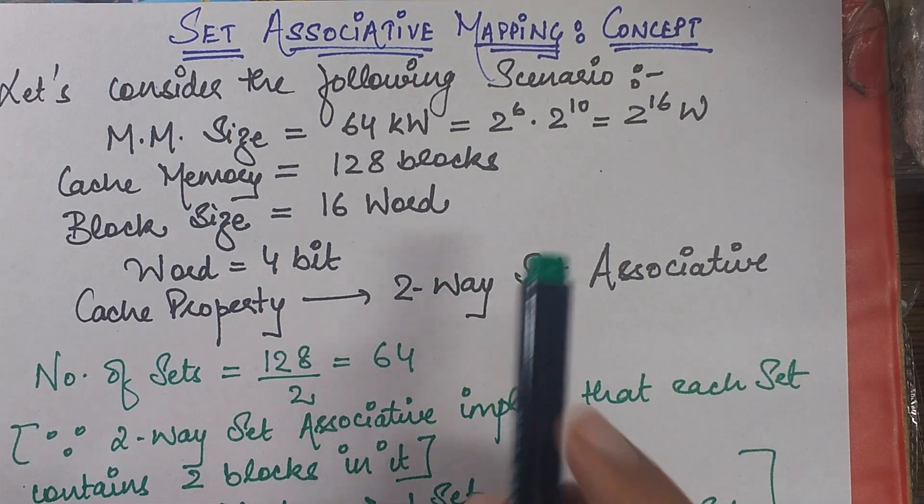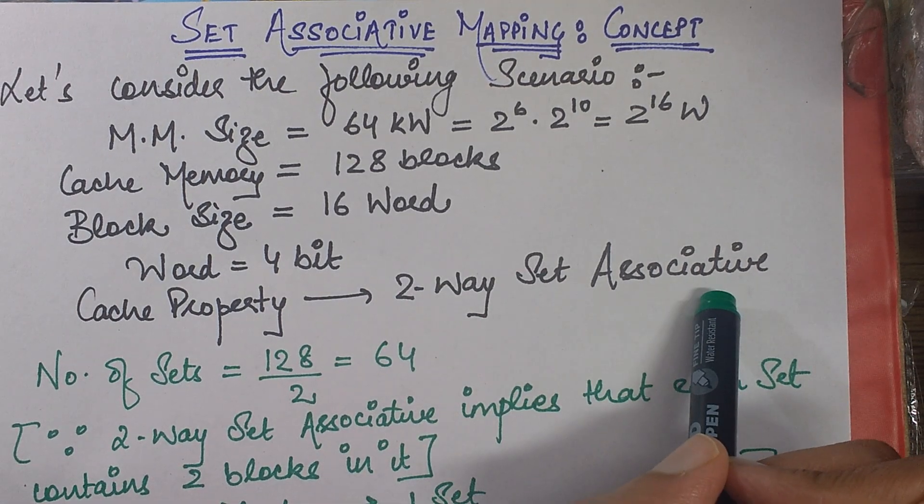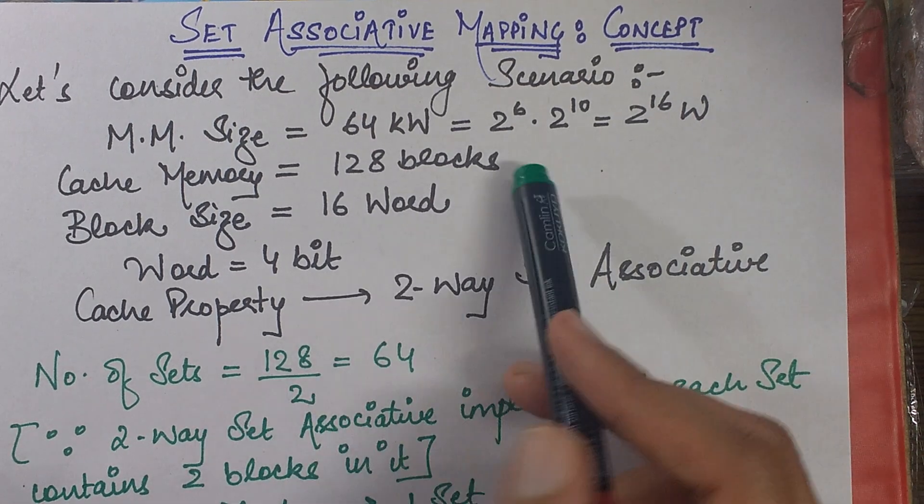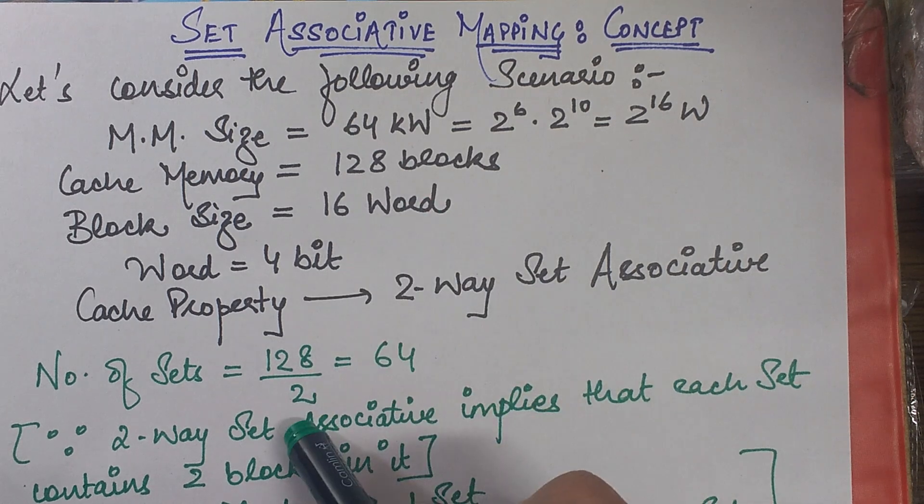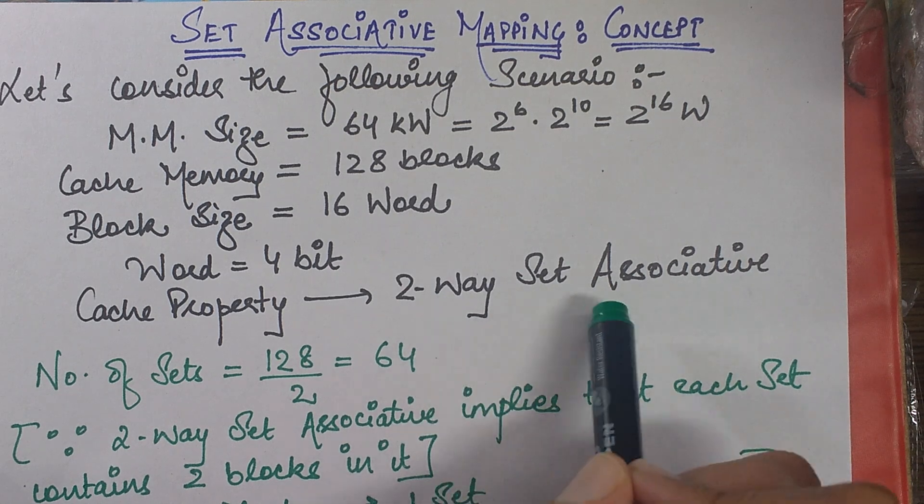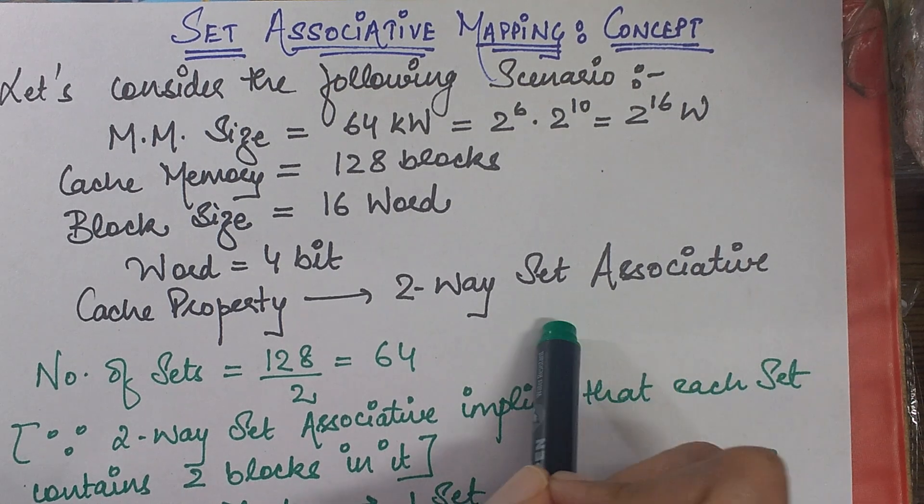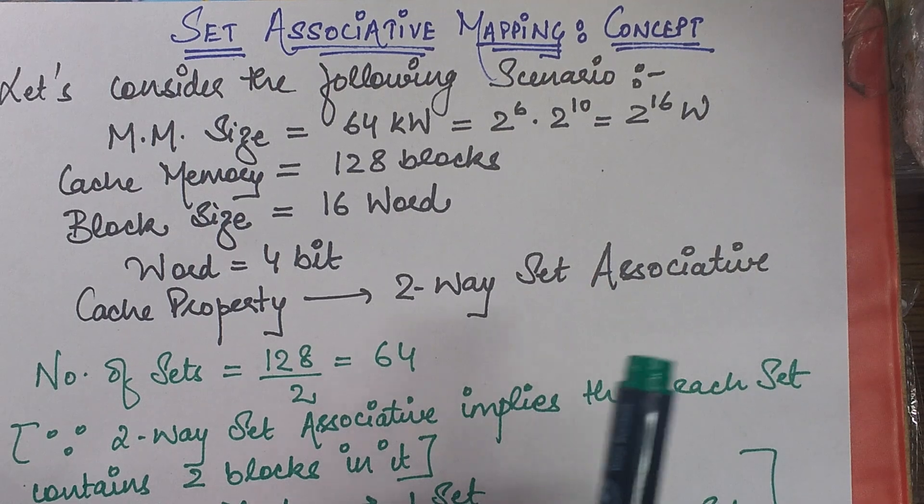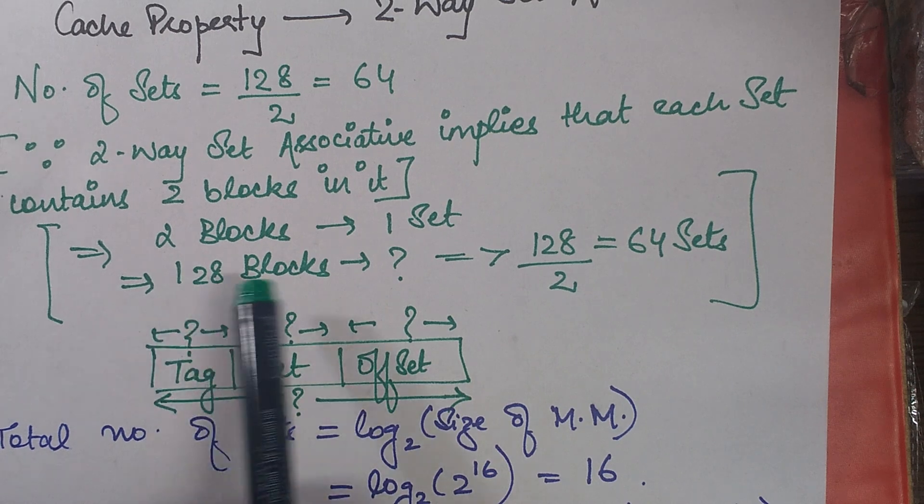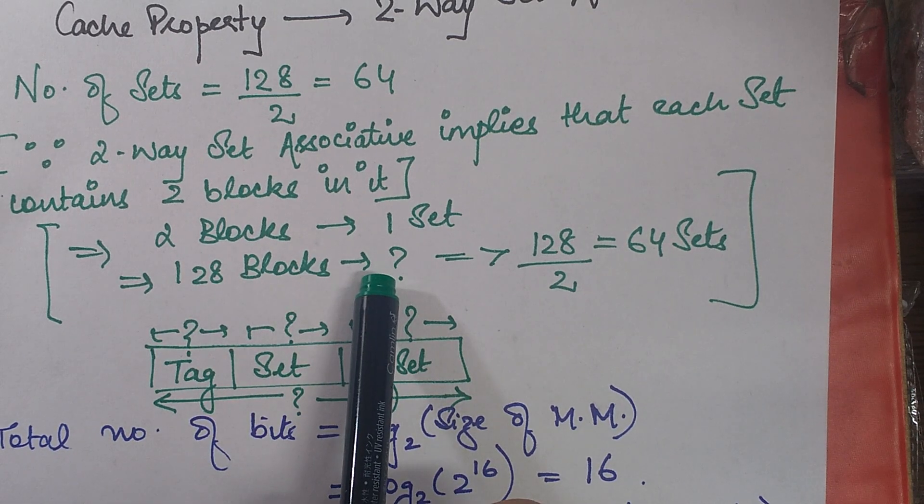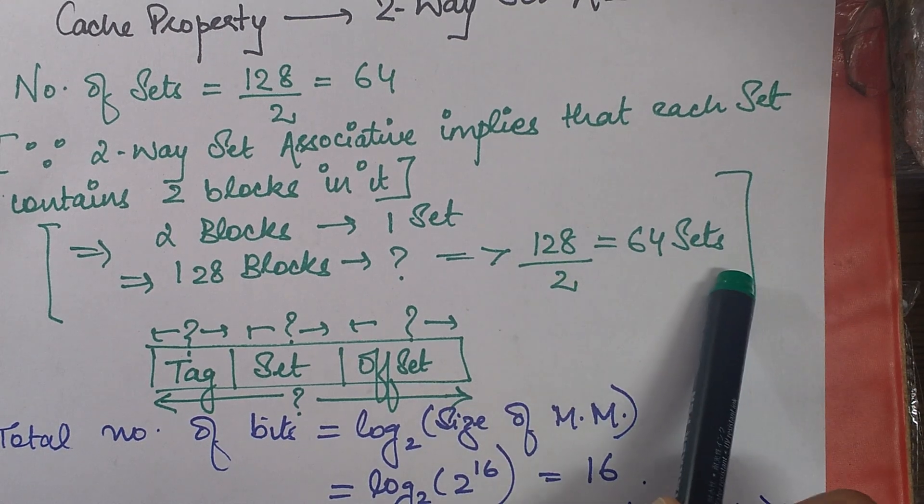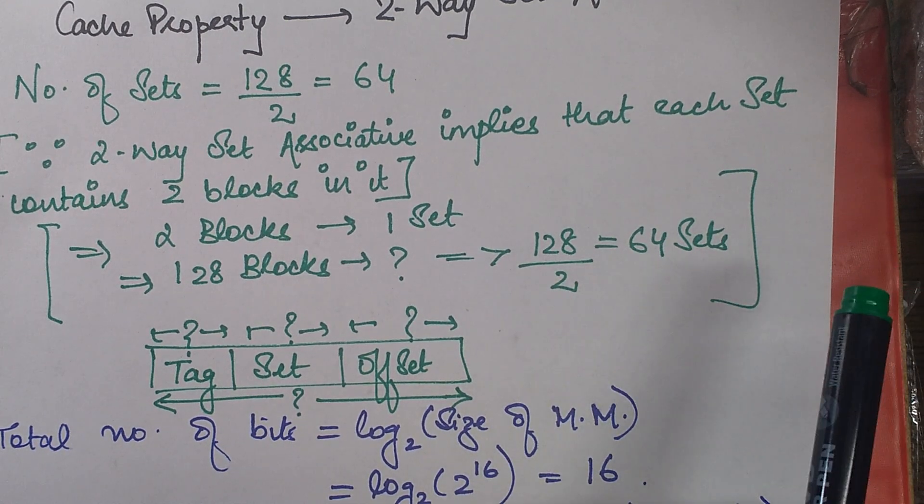Now cache property given over here is that it is a two-way set associative. So the first thing that comes into my mind is to calculate the number of sets. Now since I have 128 blocks, so the number of sets will be 64. Because it says that it is two-way set associative, which actually means that every set contains two blocks. Now if every set contains two blocks, then 128 blocks will eventually be divided into 128 by 2, which is 64.